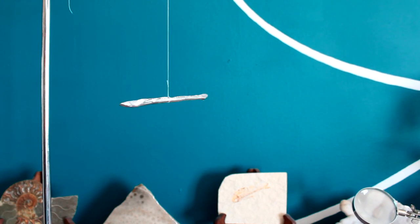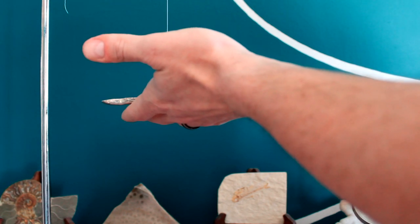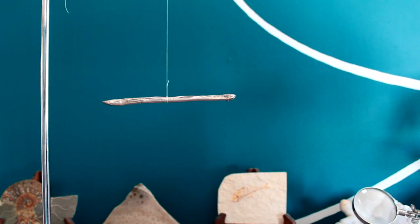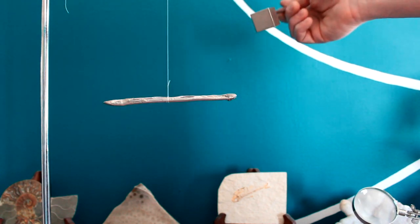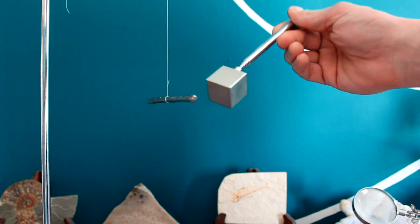Okay, now, even though bismuth is very diamagnetic, it's still a very weak force. So if we want to see the effect, that's why I'm hanging my bismuth here from a very thin sewing thread. And I'm going to use my very strong one-inch cube neodymium magnet.